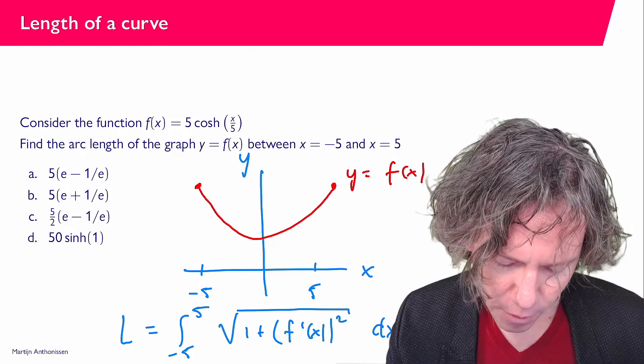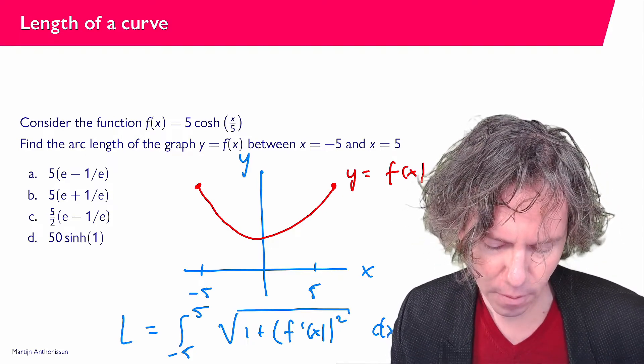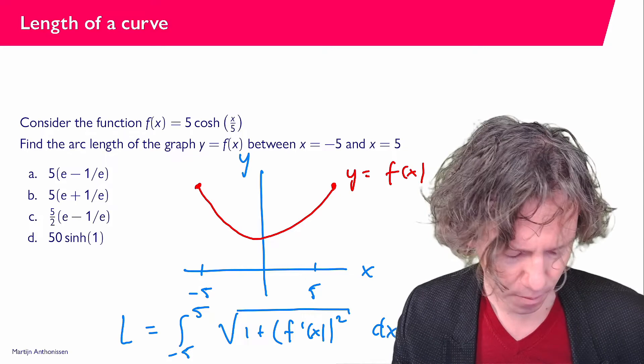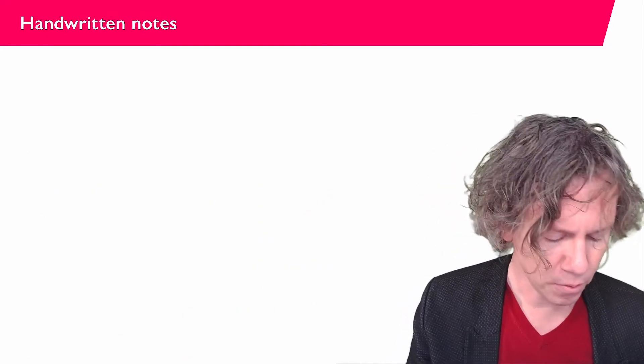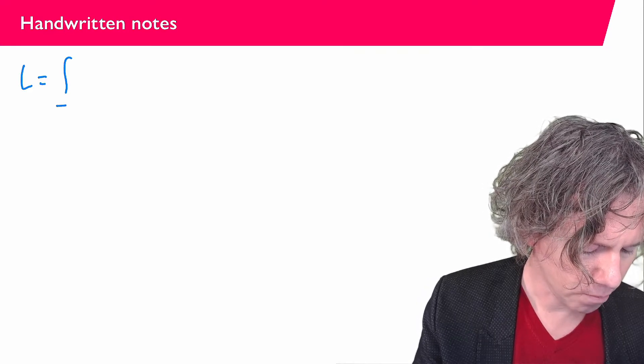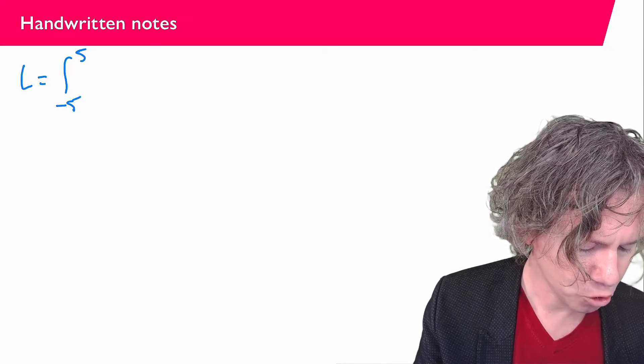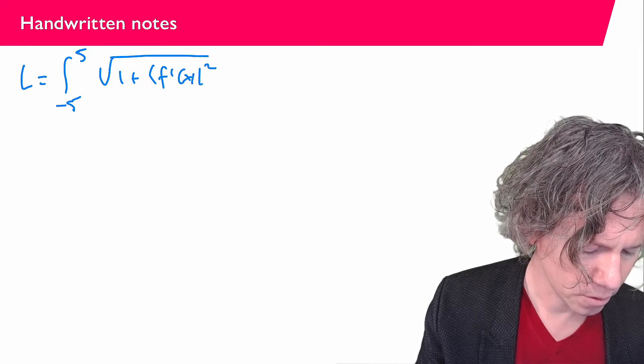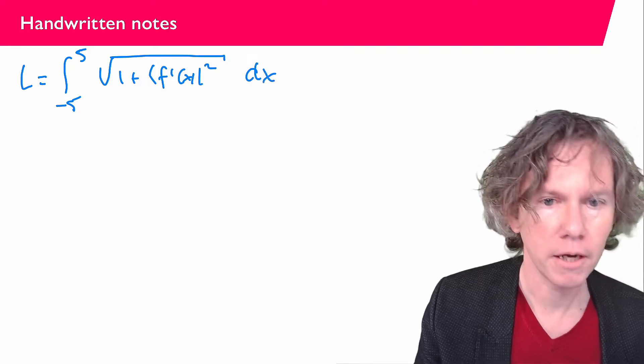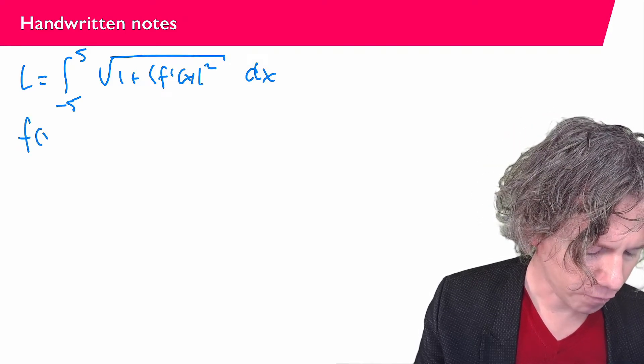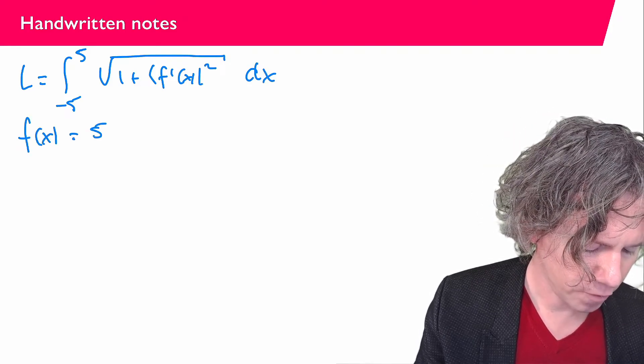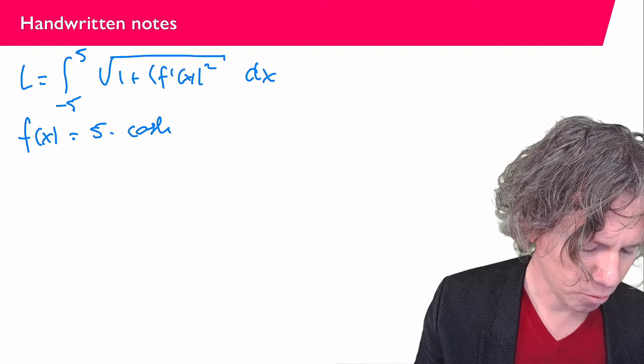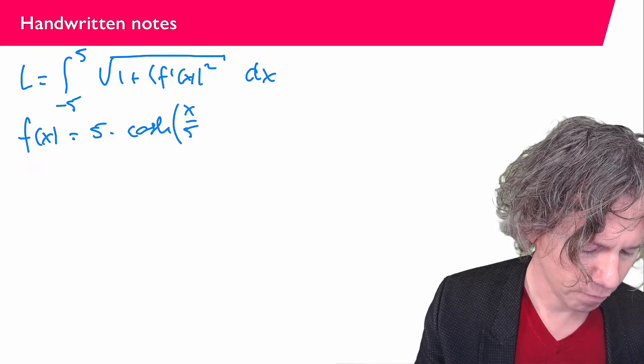Let me get a bit of paper here. So what we are being asked to compute is this L, the integral from minus 5 up to 5 of square root of 1 plus f prime squared dx. We have that f(x) = 5 times cosine hyperbolic of x over 5.